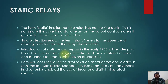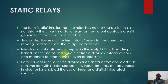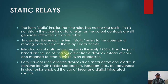The next step of relay evolution is static relays. The term 'static' implies that the relay has no moving parts, though output contacts are still attracted armature contacts. The term static refers to the absence of moving parts to create the relay characteristics. The introduction of static relays began in the early 1960s. Their design is based on the use of analog electronic devices instead of coils and magnets to create the relay characteristics.